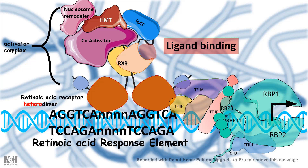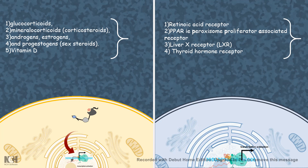To summarize with examples: two distinct paradigms exist. The first involves cytoplasmic receptors that translocate into the nucleus — glucocorticoid, mineralocorticoid, androgens, progesterones, and vitamin D fall under this category. The second involves receptors already in the nucleus waiting for the ligand — retinoic acid receptors, thyroid receptors, PPAR, and liver X receptor all fall under this nuclear receptor category. Both categories are intracellular receptors.